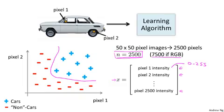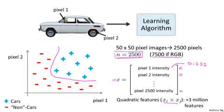If we were to try to learn a nonlinear hypothesis by including all the quadratic features — all the terms of the form xi times xj — with 2,500 pixels we would end up with a total of 3 million features. That's just too large to be reasonable; it would be computationally very expensive to represent all of these 3 million features per training example. So simple logistic regression together with adding in the quadratic or cubic features is just not a good way to learn complex nonlinear hypotheses when n is large, because you just end up with too many features.